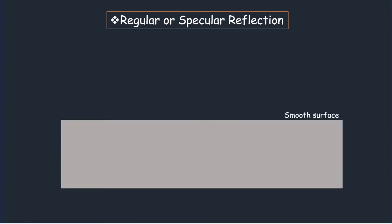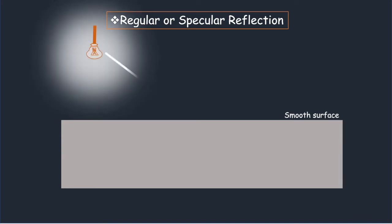Specular or regular reflection is the mirror-like reflection of rays of light. Specular reflection is defined as light reflected from a smooth surface at a definite angle. In such a type of reflection, if a ray of light could be observed approaching and reflecting off of a smooth mirror,